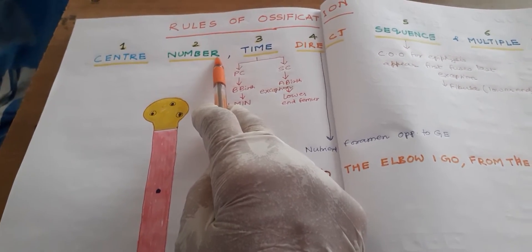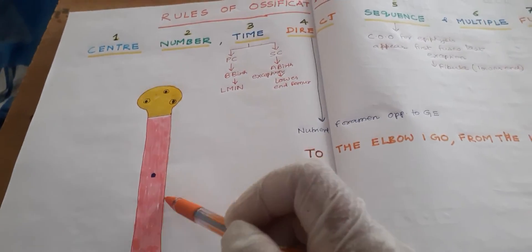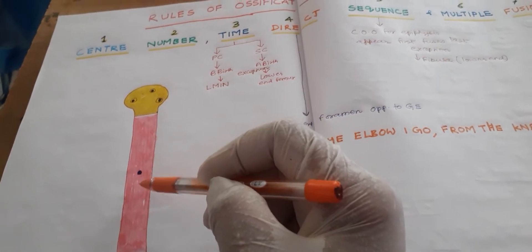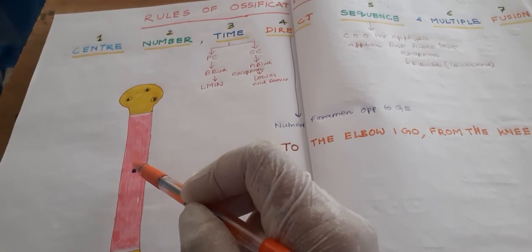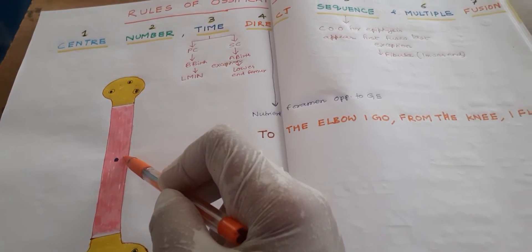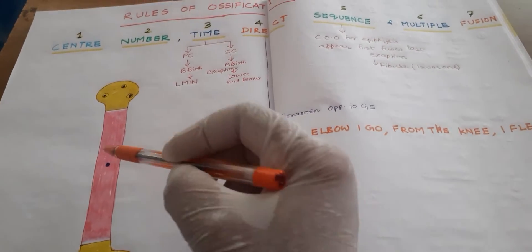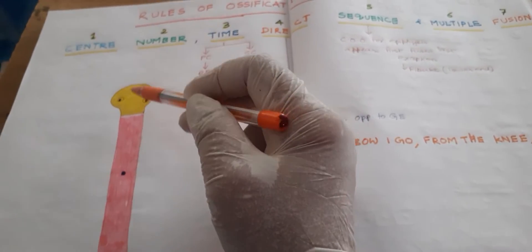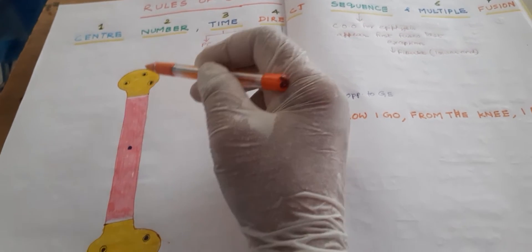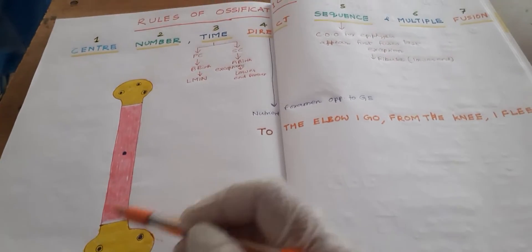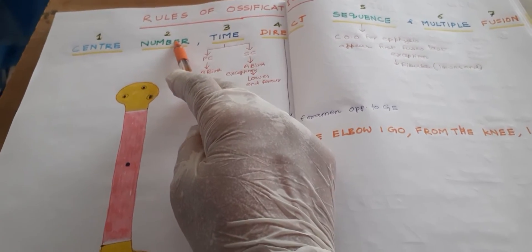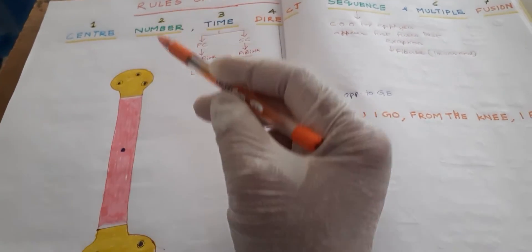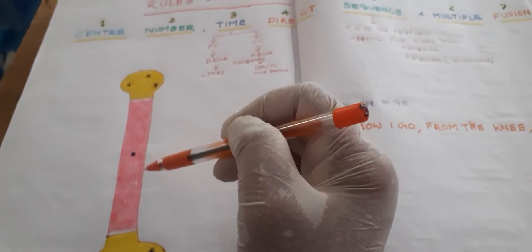Now coming to the second point — that is the number. The primary center always comes as one; there is only a single center of ossification — the primary ossification center. The secondary centers, which lie in the epiphysis, are in multiple number. So the second rule is about the number of primary and secondary centers of ossification.